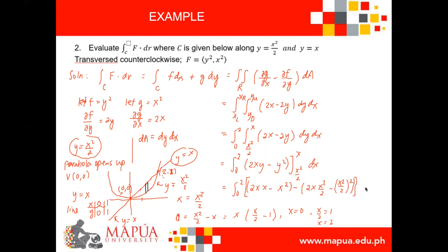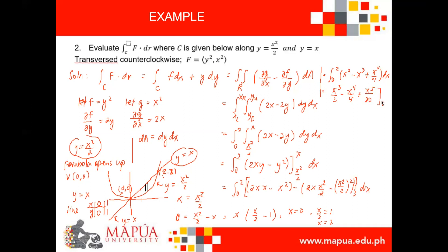Simplifying further: 2x times x gives 2x squared, minus x squared gives x squared. Then x times x squared gives x cubed, so minus x cubed. And (x squared over 2) squared gives x to the 4th over 4, which becomes positive x to the 4th over 4. Now integrating: the integral from 0 to 2 of (x squared minus x cubed plus x to the 4th over 4) dx equals x cubed over 3 minus x to the 4th over 4 plus x to the 5th over 20, evaluated from 0 to 2.